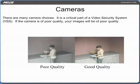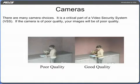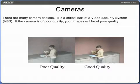There are many camera choices. It is a critical part of a system. If the camera is of poor quality, your images will be of poor quality. The video camera is the heart of any security system. Behind every successful system, you will find a well-matched camera, lens assembly, and an installer who is properly trained. This combination of a camera, lens, and installer will always be the determining factors in the overall picture quality of a system.